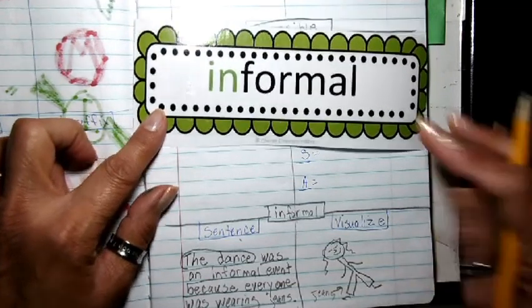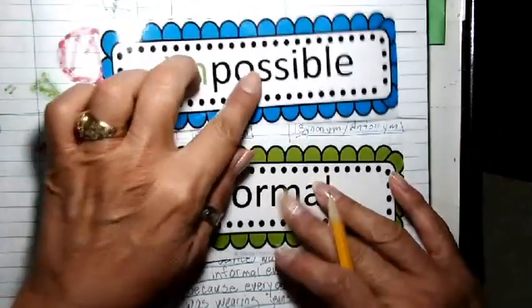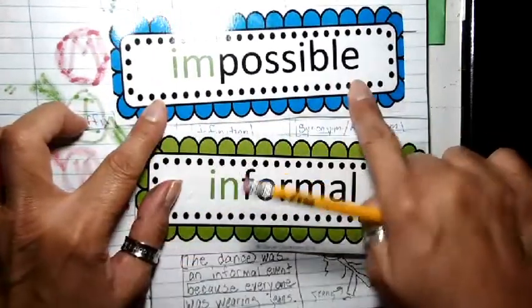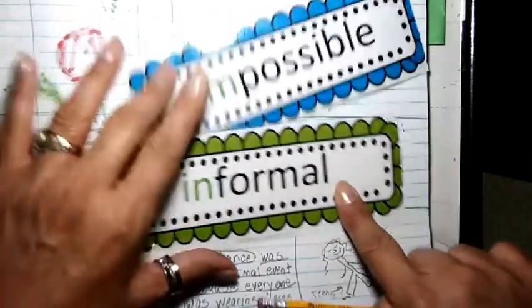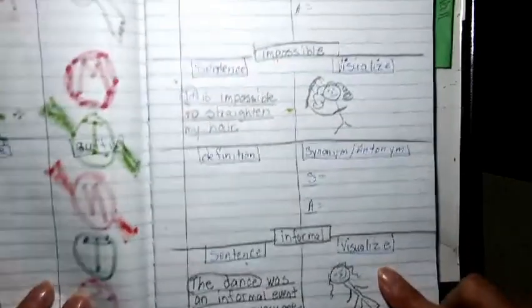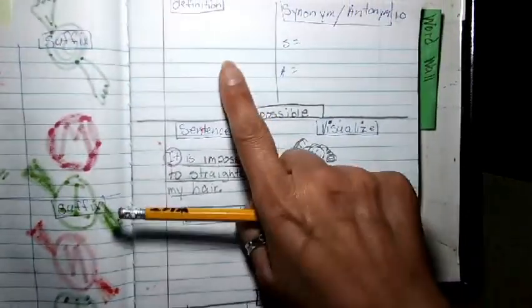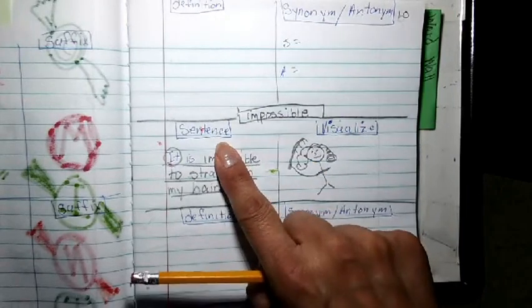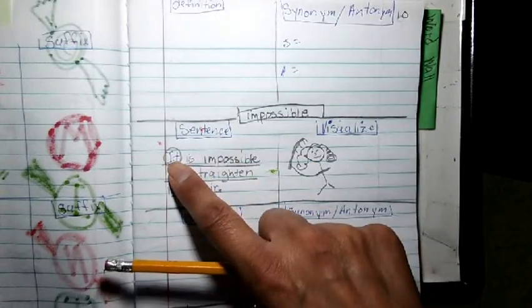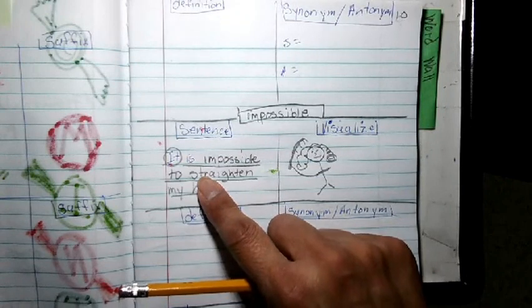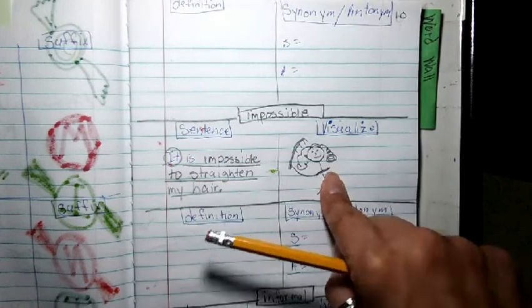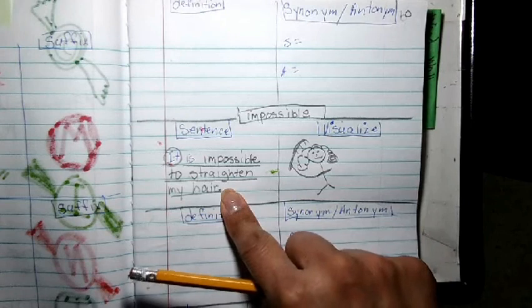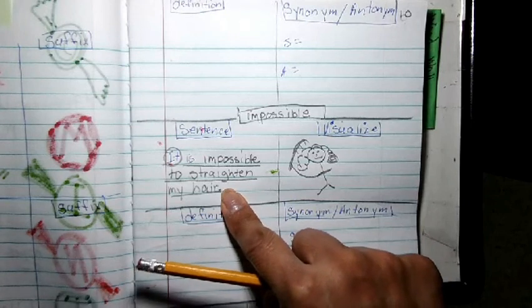So my two words for Nifty Fifty are impossible and informal. Again, and this is the graphic organizer where I'm going to put the definition, synonym, antonym. I'm going to write a complete sentence with a subject, complete subject and a complete predicate. Then I'm going to visualize my sentence. And that is your Nifty Fifty for the week.